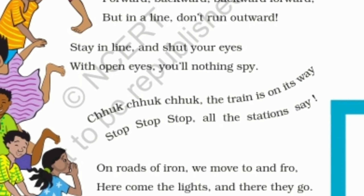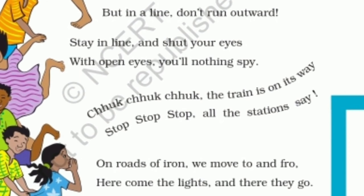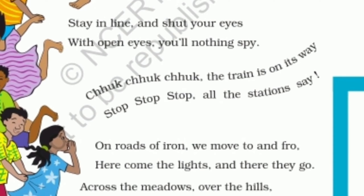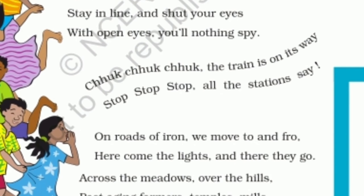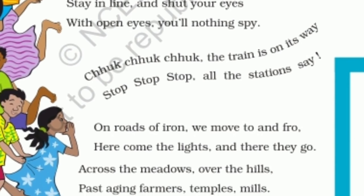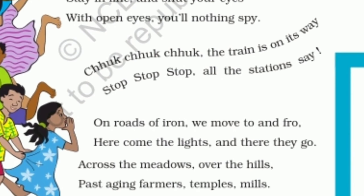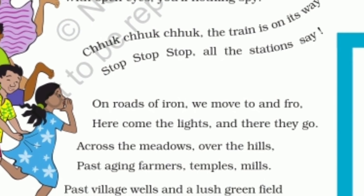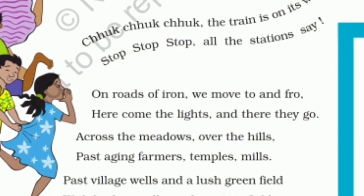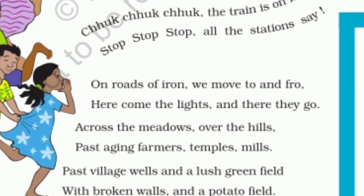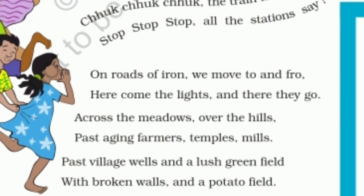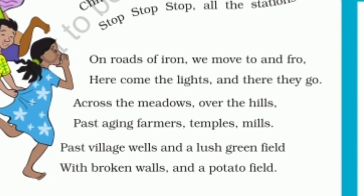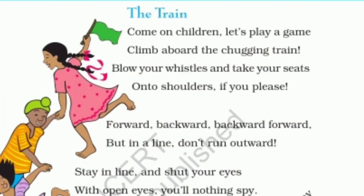On roads of iron, we move to and fro. Here come the lights and there they go. Across the meadows, over the hills, past aging farmers, temples, mills, past village wells and a lush green field with broken walls and a potato field.